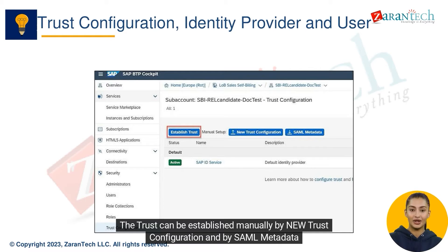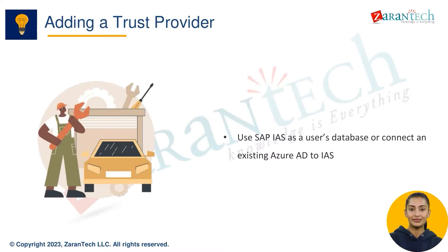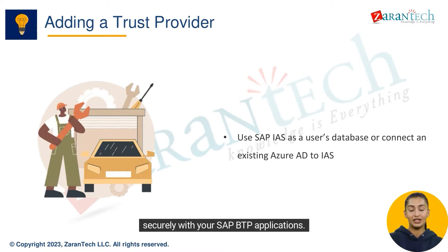Trust can be established manually by new trust configuration and by SAML metadata. Adding a trusted provider allows you to establish a connection and integrate external services or systems securely with your SAP BTP applications.